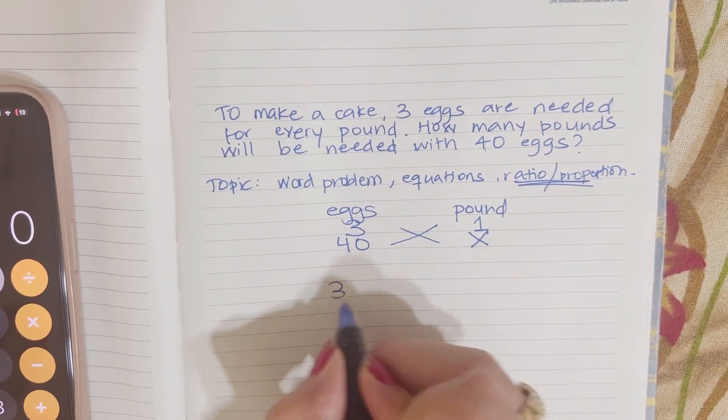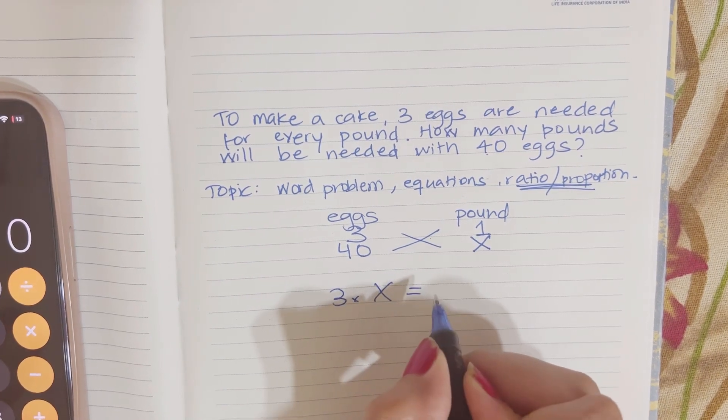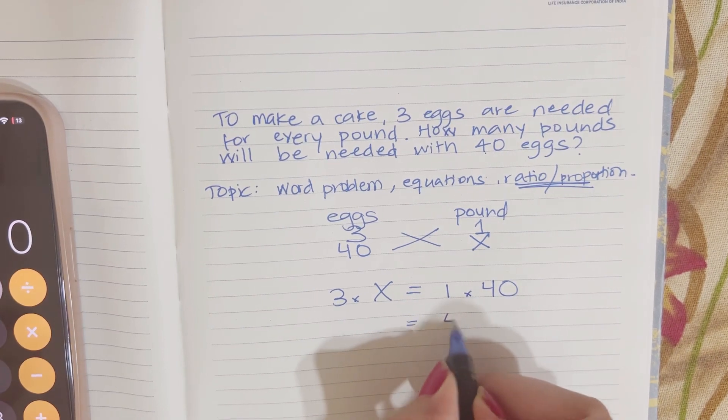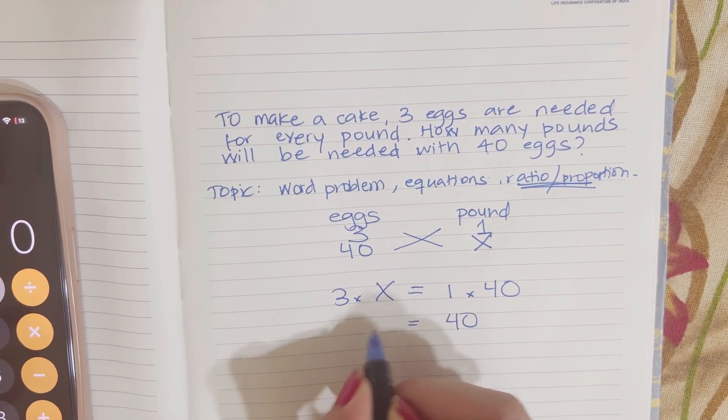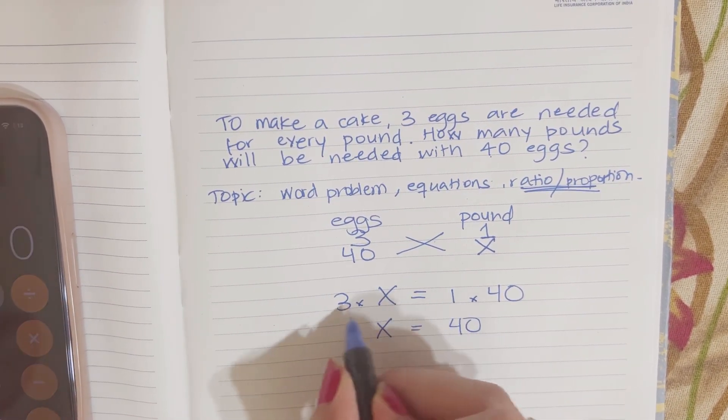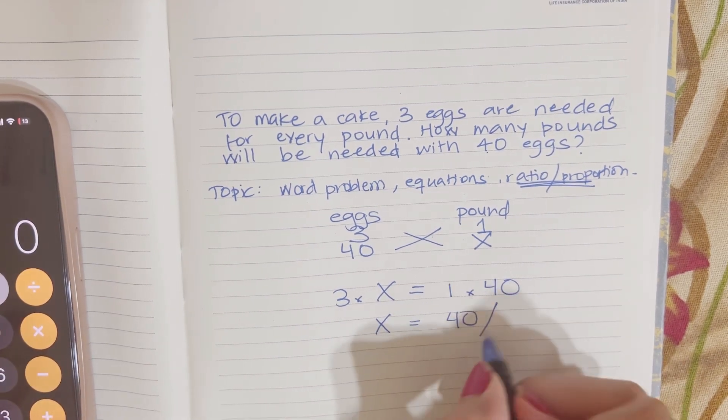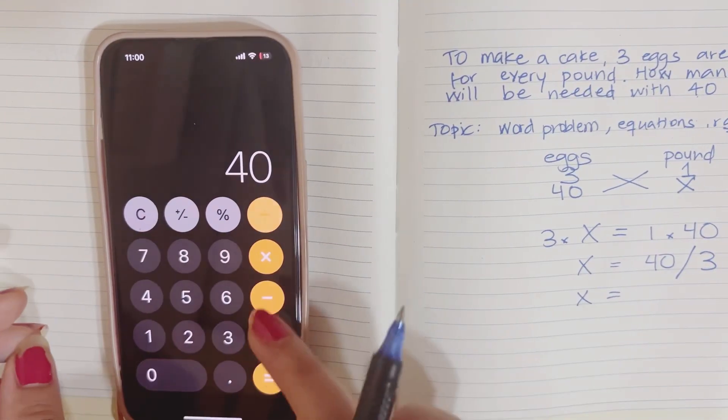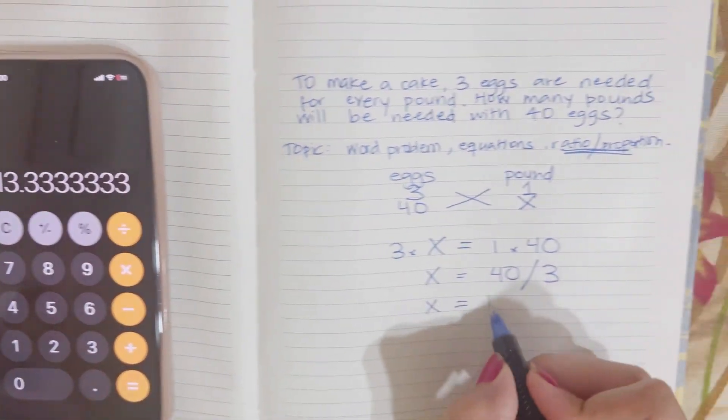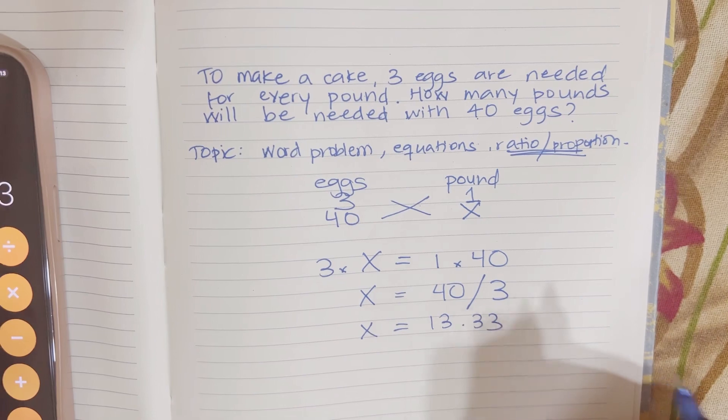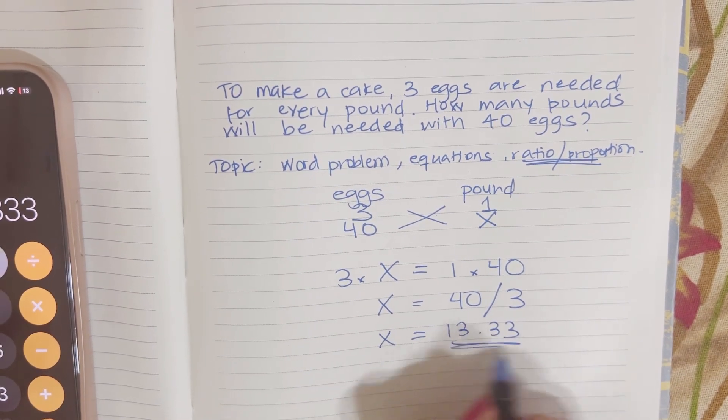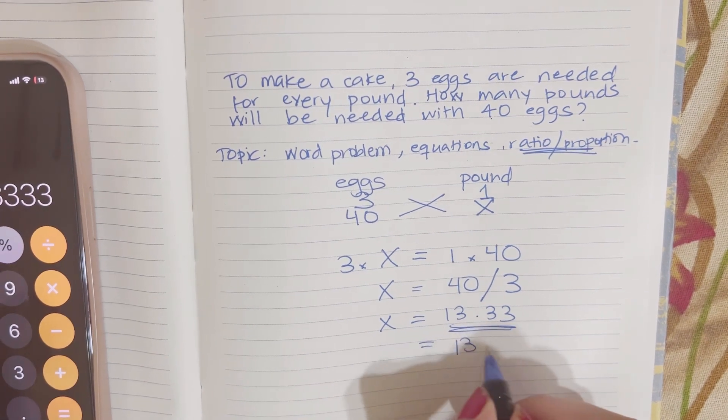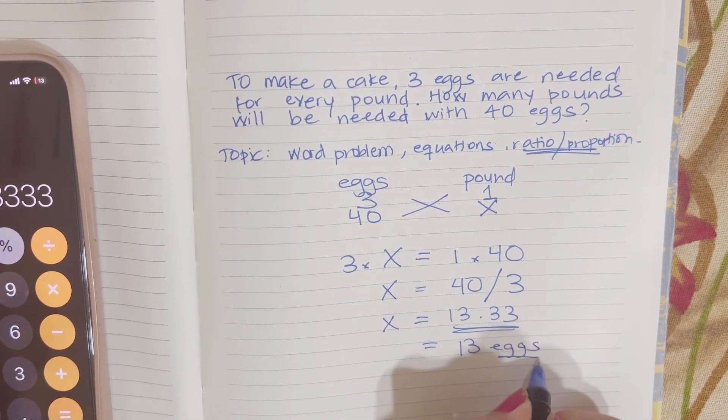So 3 multiplied by x equals 1 multiplied by 40, which is 40. Then x stays here and 40 gets divided by 3, which is 40 divided by 3, 13.33. Eggs cannot be 13.33, so it would be 13 eggs. That's your answer.